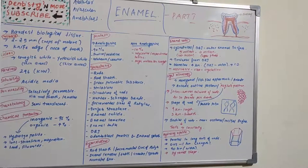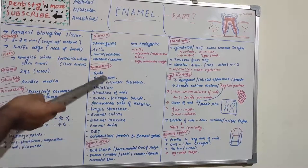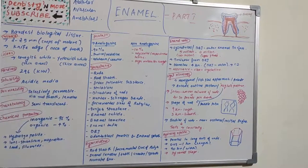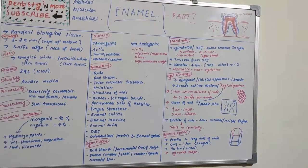Regarding permeability, enamel is selectively permeable. The route of passage occurs via rod sheath, enamel lamellae, and enamel tufts, which are rich in organic content. Specific gravity is around 2.8, and enamel is semi-translucent.